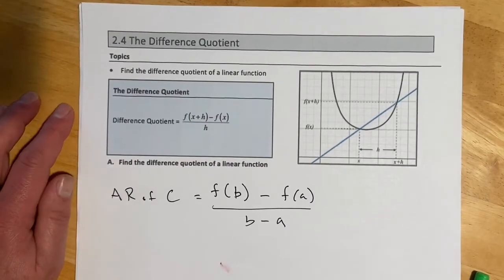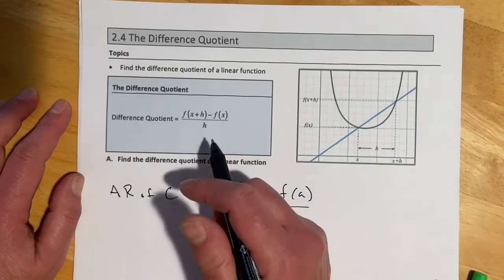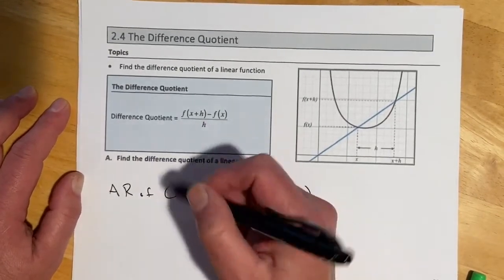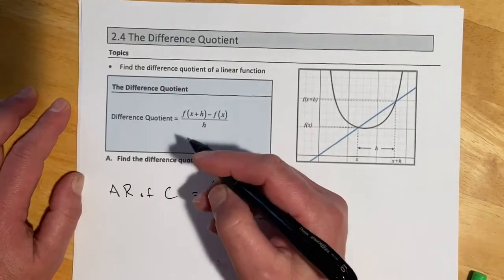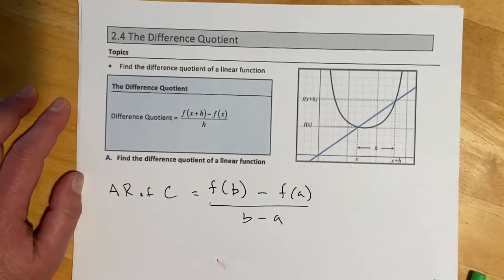Hey all, this is Derek and this is section 2.4. It's going to be an introduction to the difference quotient. This idea actually ends up being all first quarter calculus. If you throw a limit in front of that, that becomes the definition of a derivative.